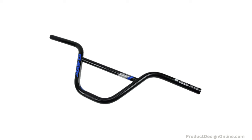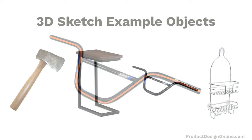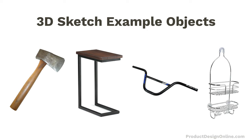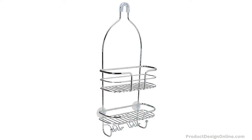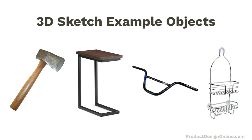Bike handlebars are another common use case as they're often bent in multiple directions, which is something we can't easily recreate with a flat 2D sketch. The fourth object is a shower caddy. Similar to the furniture example, we can use 3D sketching to recreate the outer contour as well as the continuous shape of the baskets. We could then use the pipe command or even the sweep command to create the 3D bodies, ultimately saving us time while using fewer features.